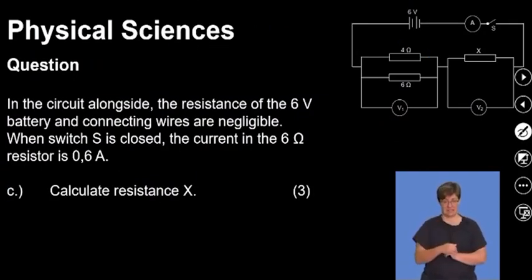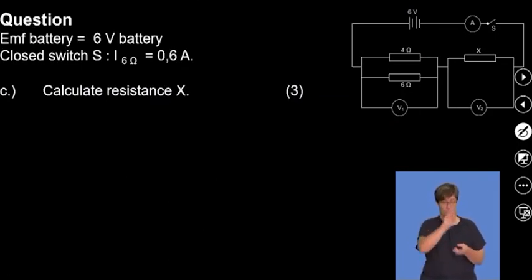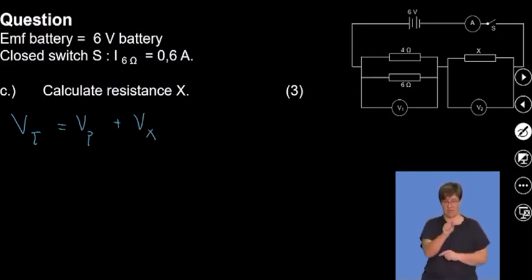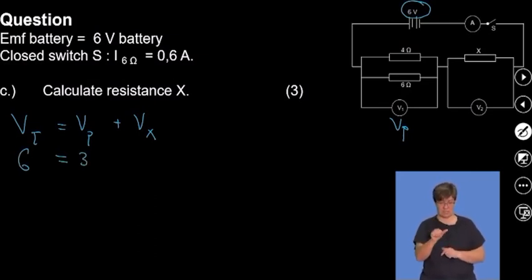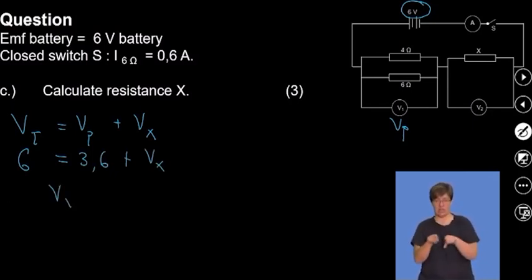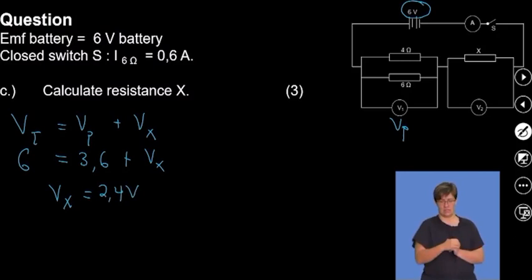Moving along, now we want the resistance of X. Resistor X has an unknown resistance, but we know something about V2. The total voltage in this circuit, V total, is split between V parallel plus Vx. This V parallel is your V1 — the voltage across the parallel combination of resistors. If the battery has negligible resistance and is six volts, this is the terminal potential difference. So six equals 3.6 plus V across X, meaning V across X is 2.4 volts. We want to calculate the resistance, and we know the total current passes through resistor X.